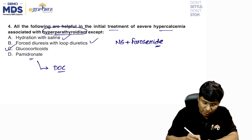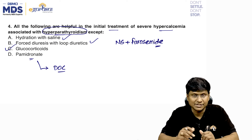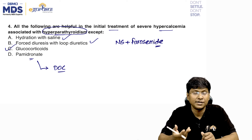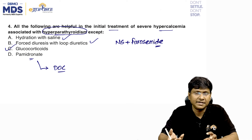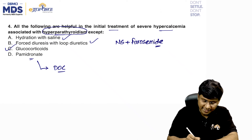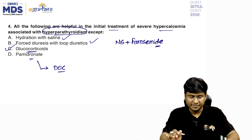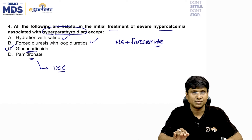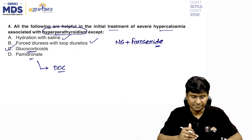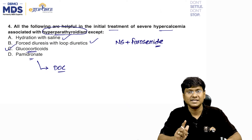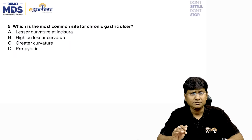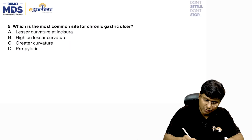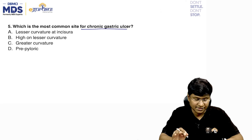Glucocorticoids are not given in hyperparathyroidism because glucocorticoids themselves activate osteoclastic activity, cause bone resorption, and themselves cause hypercalcemia. That is why glucocorticoids are not a treatment option for severe hypercalcemia associated with hyperparathyroidism. The answer is glucocorticoids (option C).